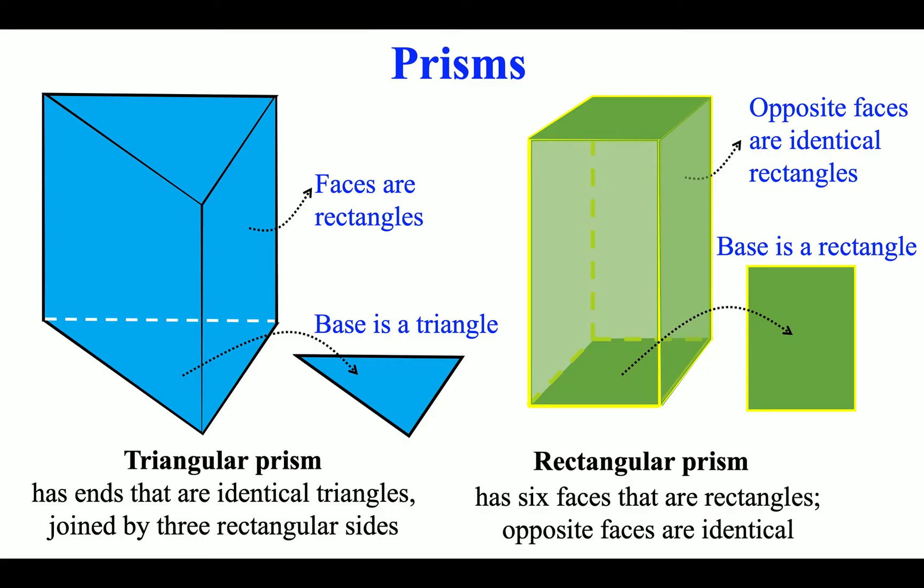Rectangular prism has six faces that are rectangles. Opposite faces are identical.